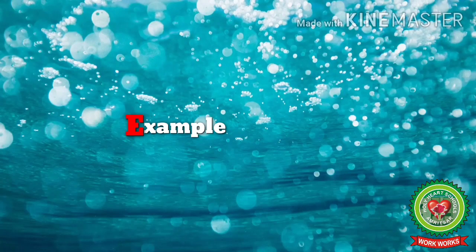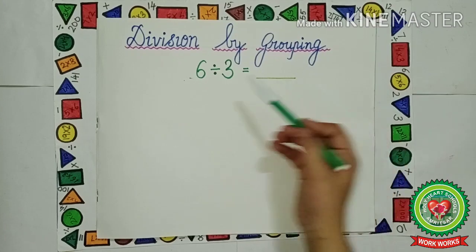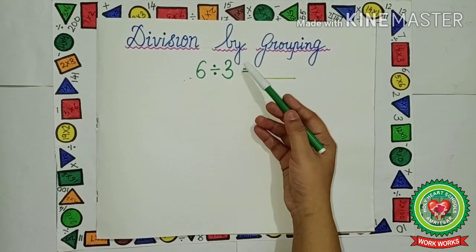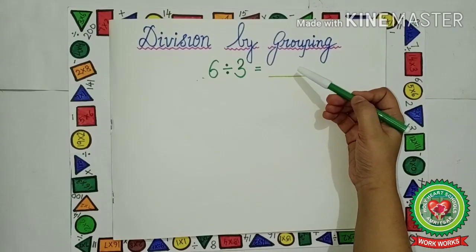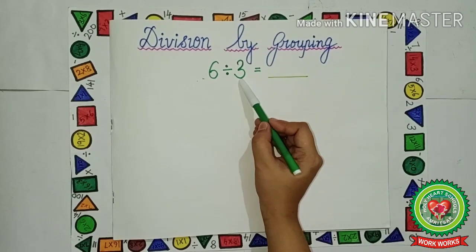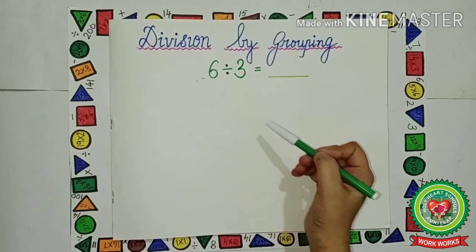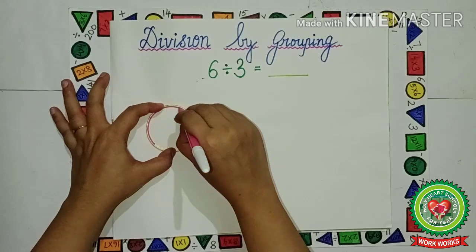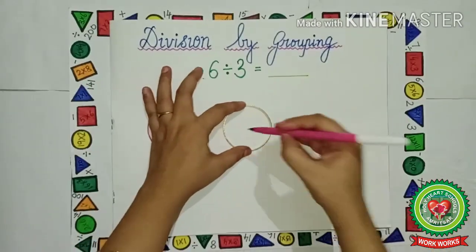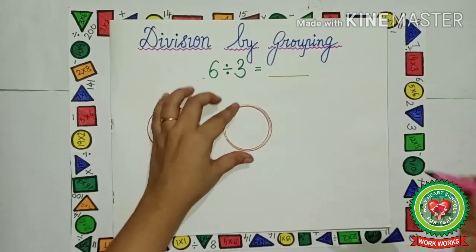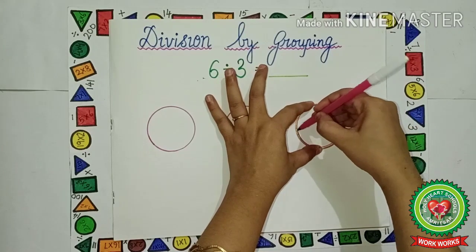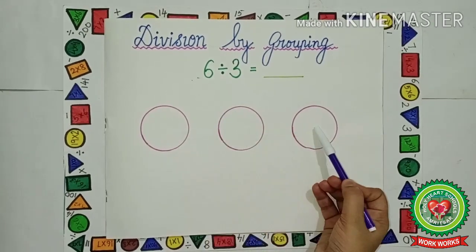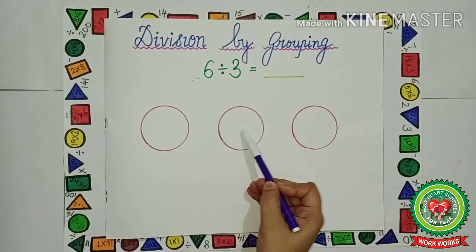Let us take one more example. 6 divided by 3 is equal to what? We have to do the division by grouping. This is asking us: if we were to divide into 3 equal groups, how many would be in each group? Let us draw the groups and see. So we will draw 3 groups. Now we have drawn 3 groups. Now we have 6 to divide between them. We will divide the number 6 equally into each group.